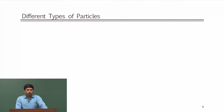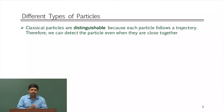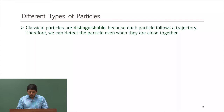What will happen if the particles were indistinguishable, and what is the situation in which indistinguishable particles arise? Classical particles are distinguishable because each particle follows a particular trajectory. Therefore you can detect the particle even when they are close together, because classical particles will not collapse onto each other. Even if they come closer you can still say this is particle 1, this is particle 2, because we have been following that particle all along.